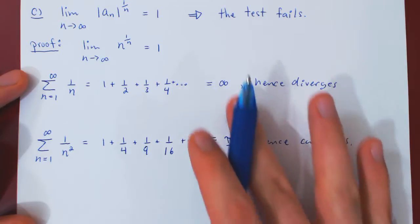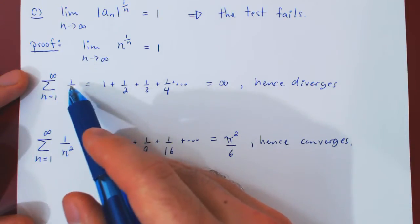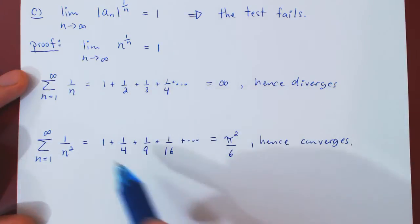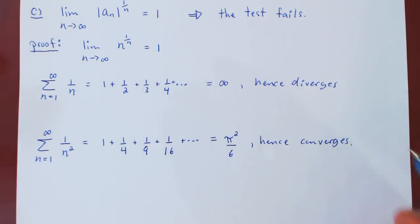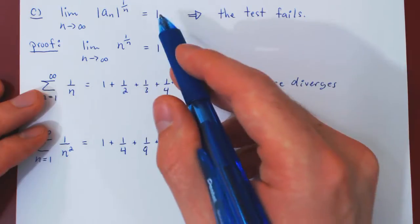But we could have omitted these two facts, simply saying here's a p-series where p is 1, so this series diverges. Here's a p-series where p is 2, therefore converges. And let's show that in both cases, the limit of the root test is equal to 1.